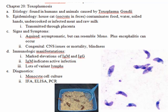Toxoplasmosis organisms are little crescent-shaped structures found in blood smears. This is why pregnant women should not change kitty litter — it can cross the placenta and be devastating to the fetus.